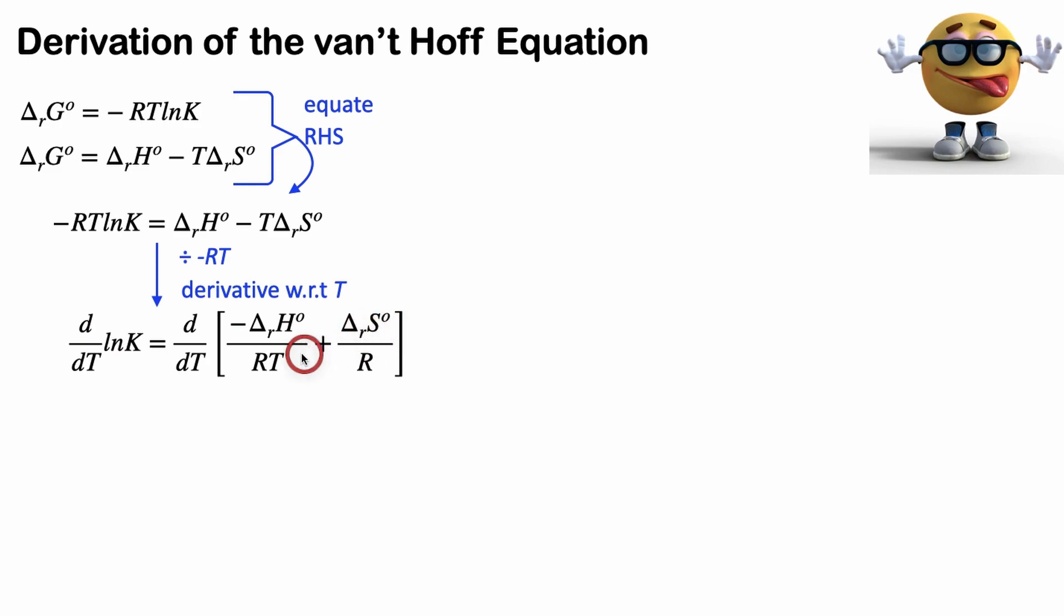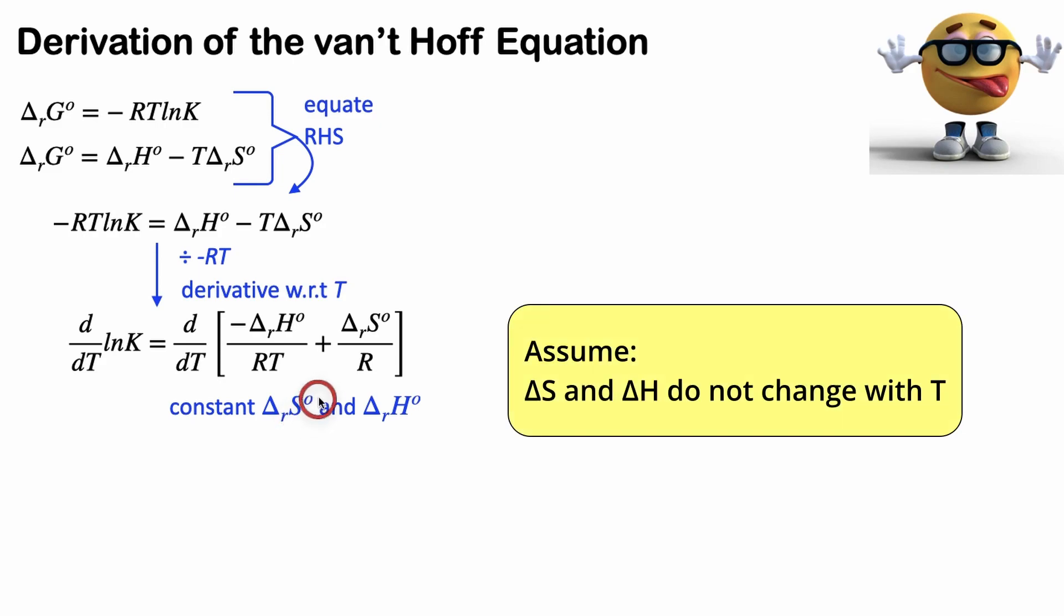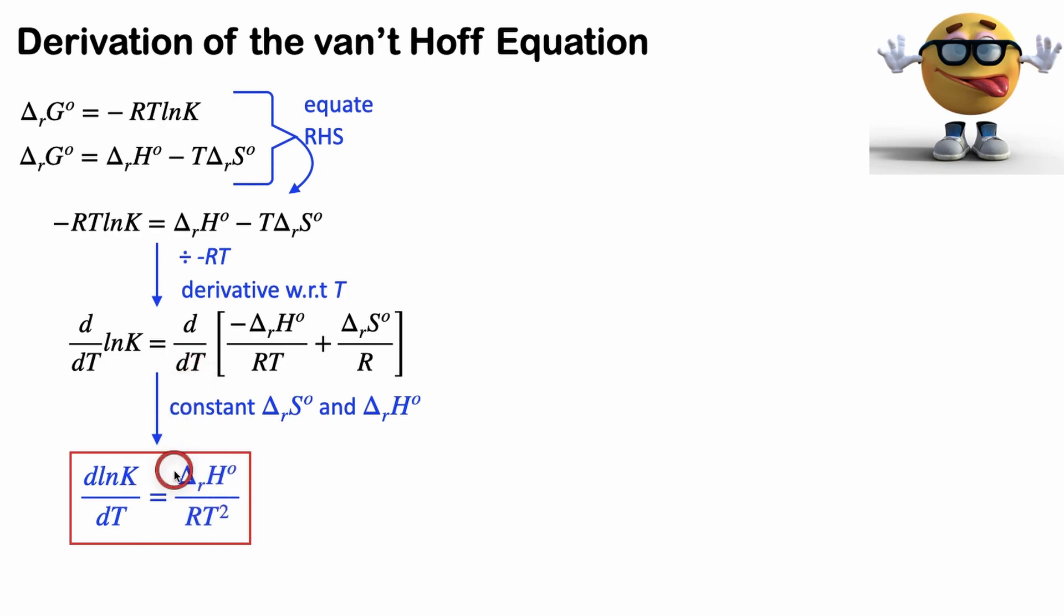And to do this derivative, we're going to make a couple assumptions. We're going to assume that the change in entropy and the change in enthalpy are constant, or temperature independent. So what that means is, it doesn't matter what temperature we do this reaction at, delta S is the same, and delta H is the same. That's the assumption we're making. So if we make those assumptions, then the derivatives aren't that bad.